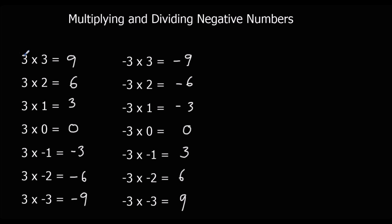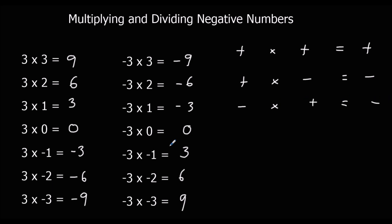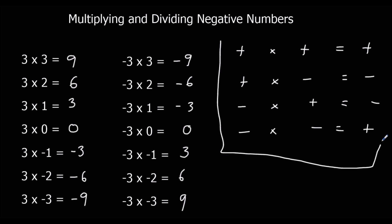So if we look at the rules here: a positive times a positive gives us a positive answer. A positive times a negative gives us a negative answer. A negative times a positive gives a negative answer. And a negative times a negative gives us a positive answer. So here we've got the rules for multiplying negative numbers.